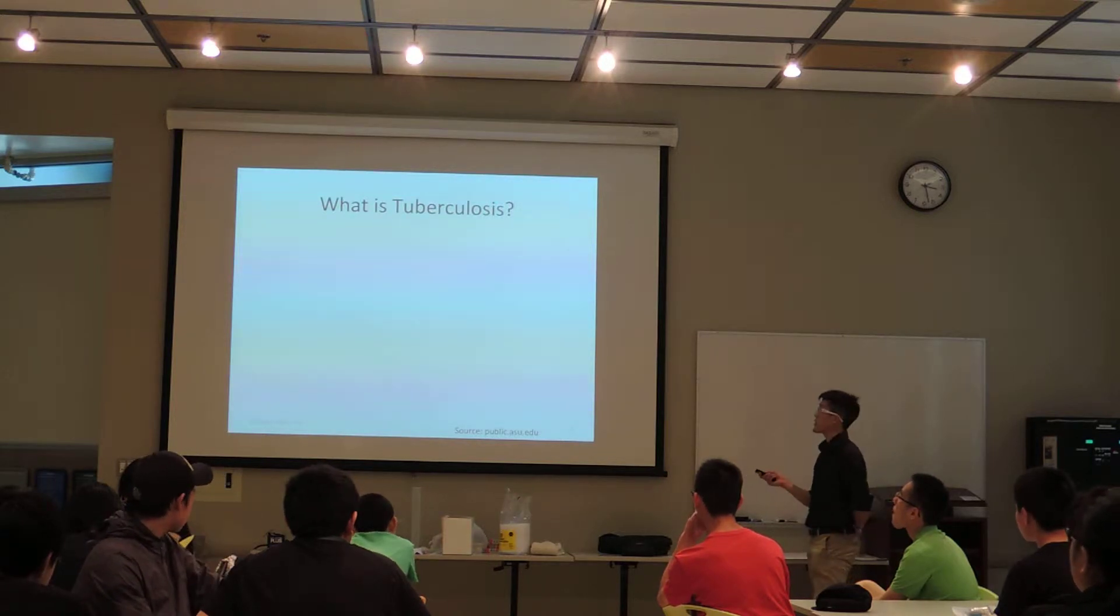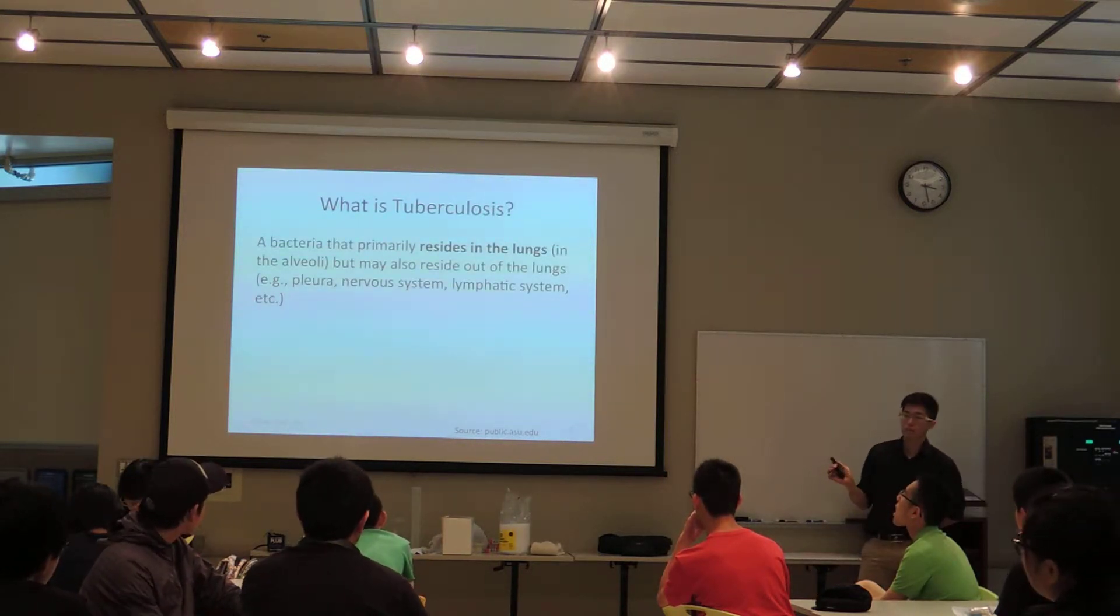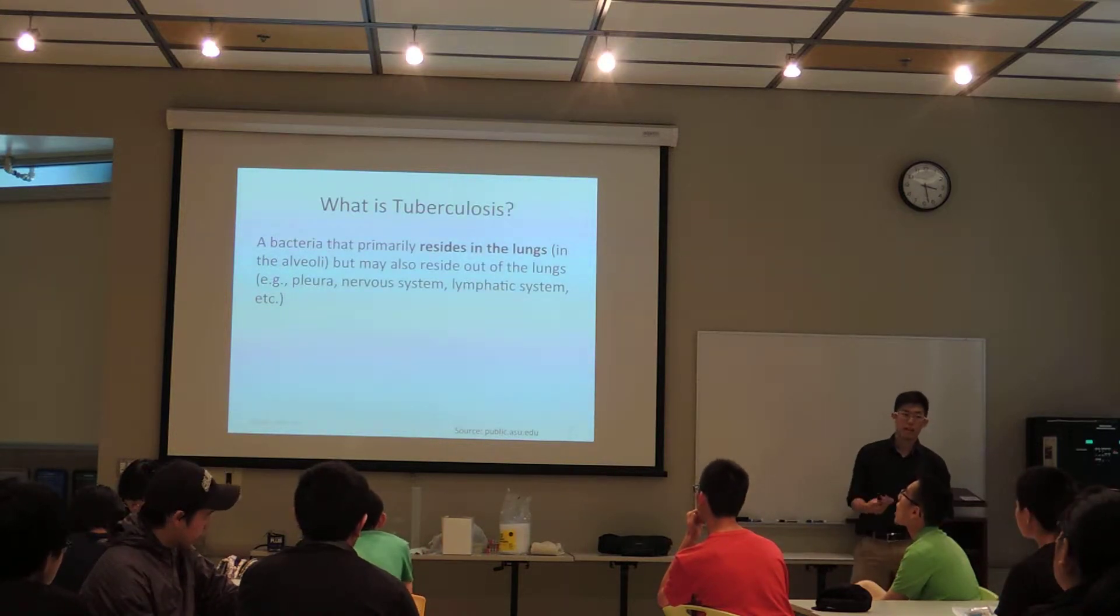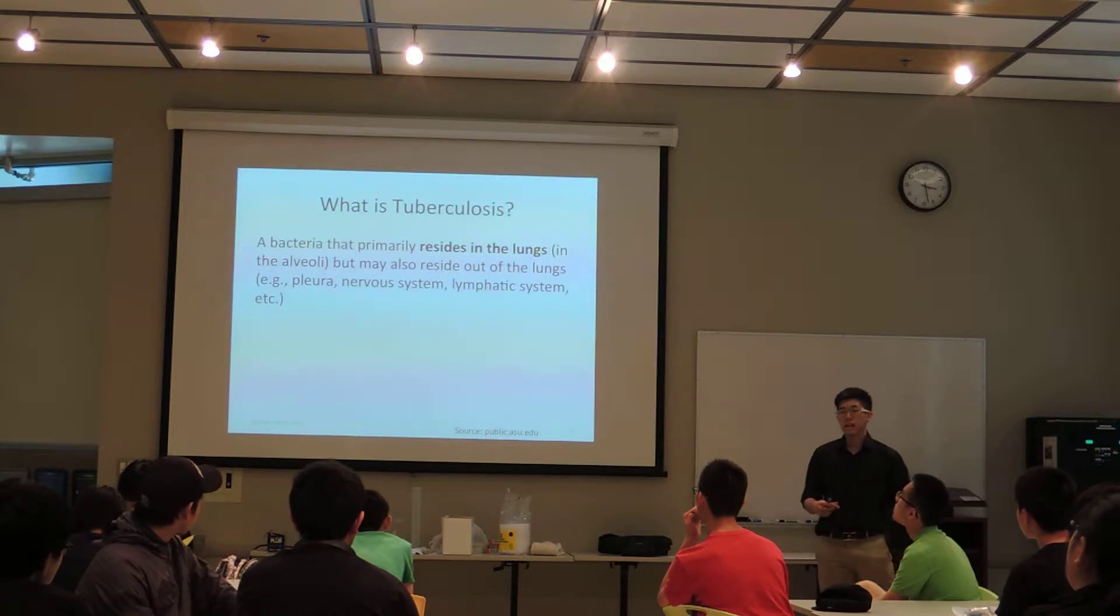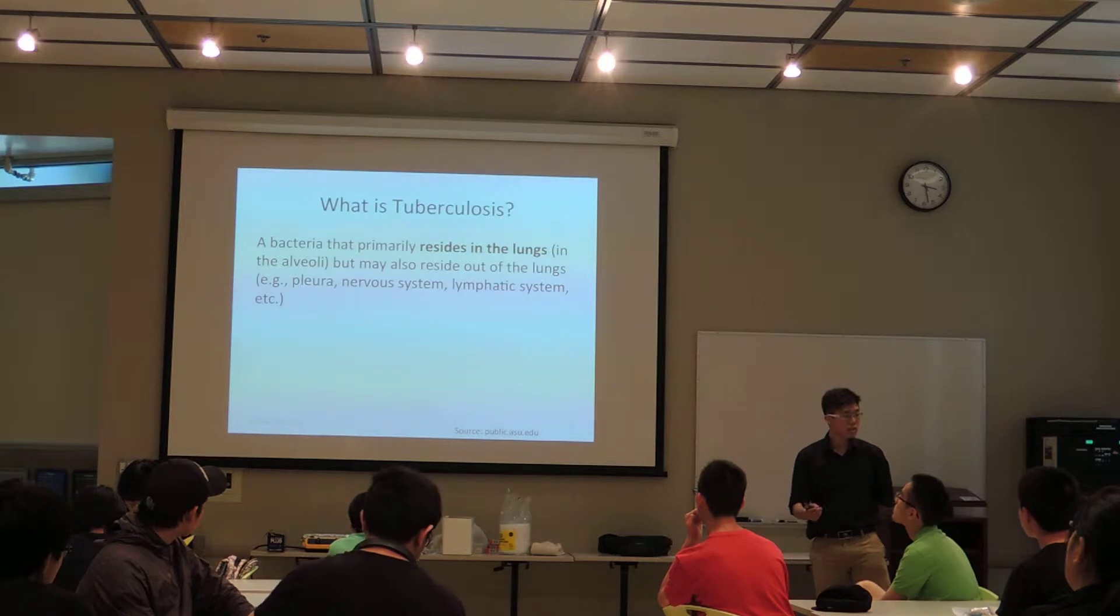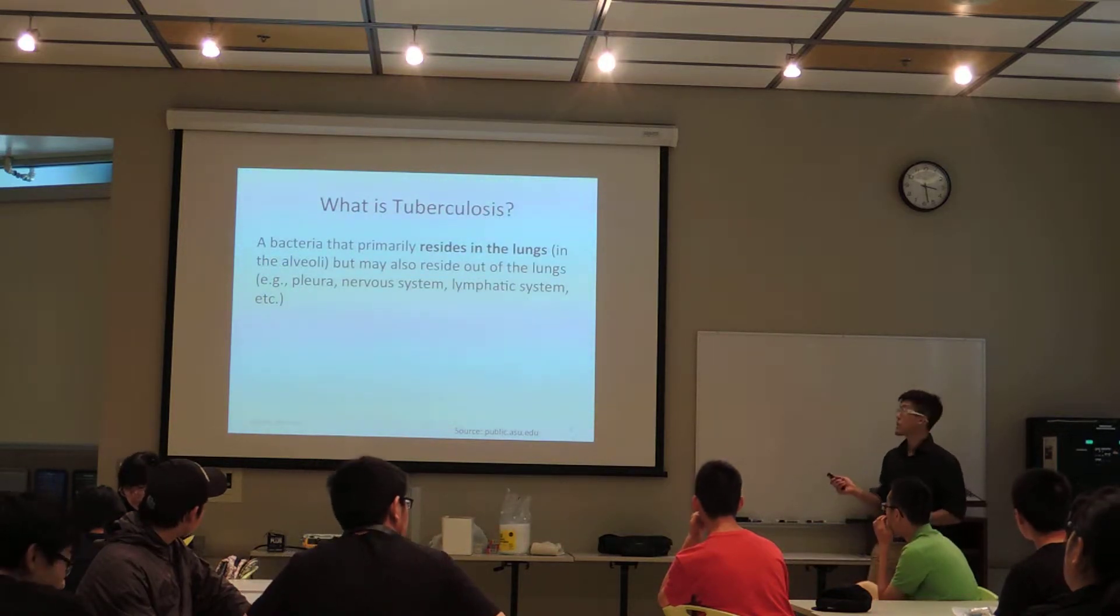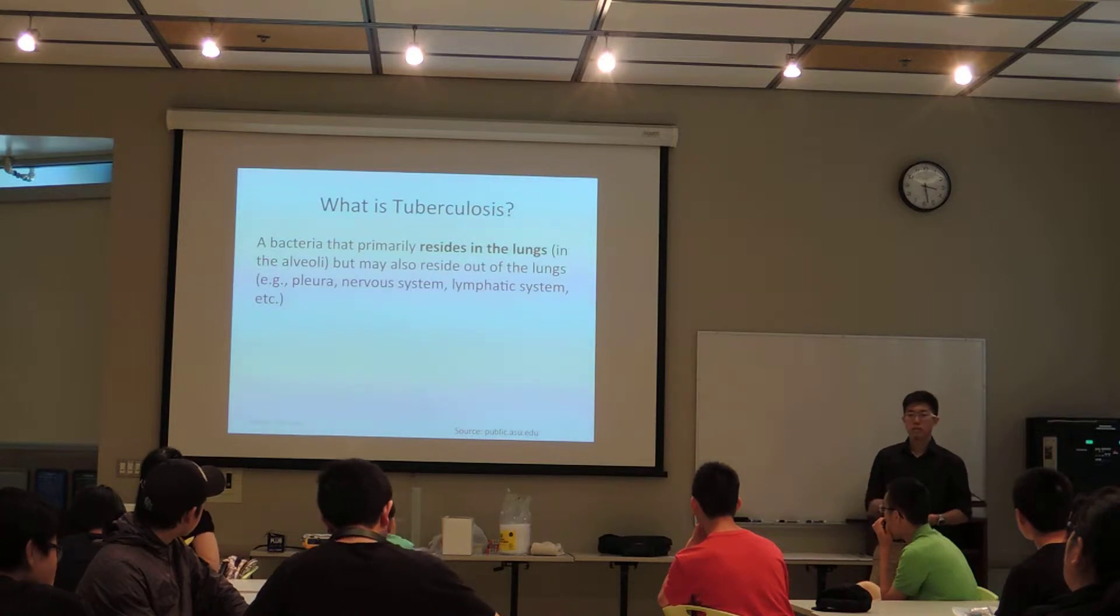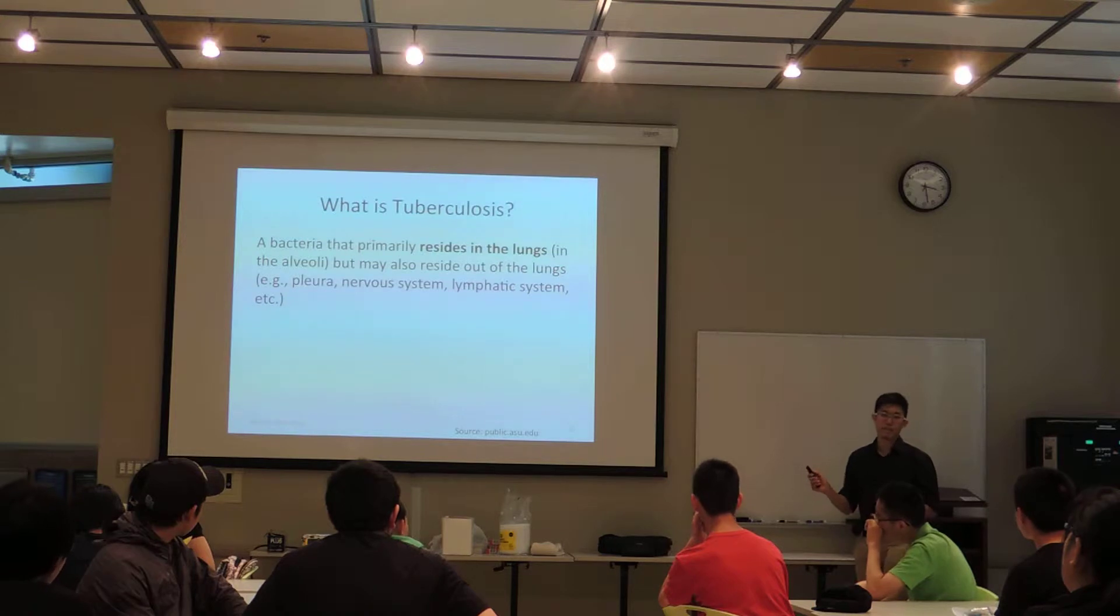Well, let's start with the definition. Tuberculosis is a bacteria that primarily resides in the lungs, in the alveoli specifically. But it can also reside outside of the lungs, like in your kidneys or in your nervous system. Today we're going to focus specifically on tuberculosis that resides in the lungs.